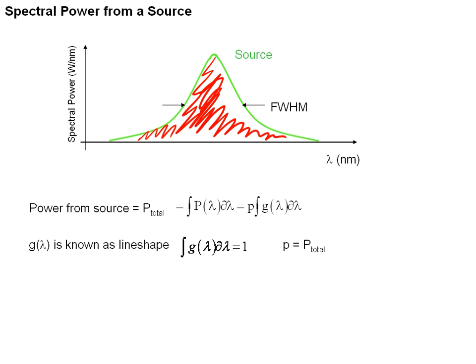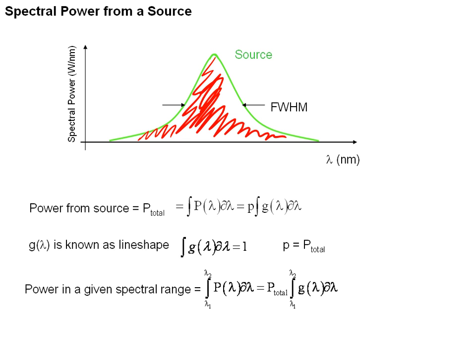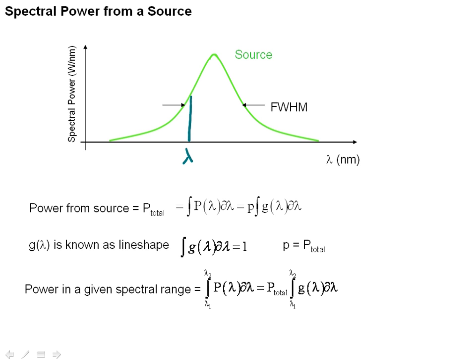If we do some simple math, it turns out that the power in a given spectral range — say, from wavelength 1 to wavelength 2 — is simply the integral of the spectral power over those wavelengths. Using our line shape term, if we integrate g of lambda from wavelength 1 to wavelength 2, the power in that spectral range is the integral of the line shape function — that shaded area — multiplied by the total power from the source.